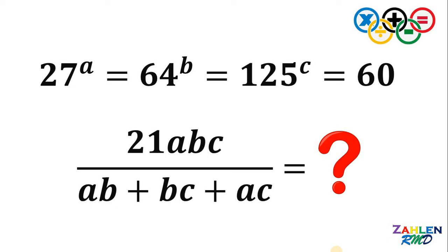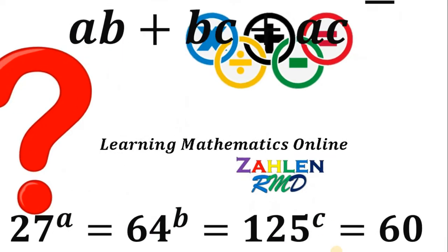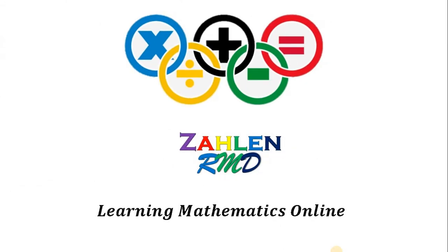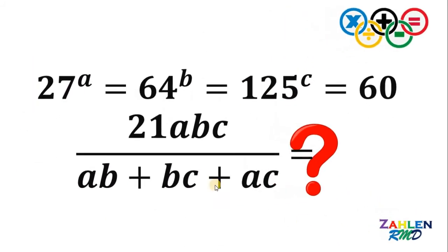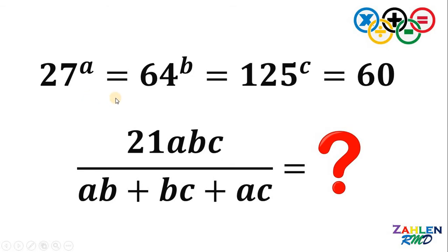Good day everyone, here's our math challenge for today. Here's our question: if 27 raised to A equals 64 raised to B equals 125 raised to C equals 60, then what is the value of 21ABC all over AB plus BC plus AC?